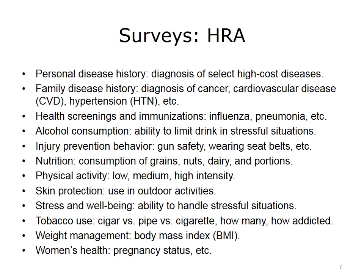Health Risk Assessment (HRA) surveys cover various topics, including Health Screening; Personal Disease History, which may help define diagnosis of select high-cost diseases; Family Disease History, which may reveal diagnosis of cancer, cardiovascular disease, hypertension, and other diseases that have a familial risk factor; Health Screenings and Immunizations, which typically covers immunization for influenza, pneumonia, and other high-impact diseases, especially for the elderly population; Alcohol Consumption and the ability to limit drinking in stressful situations; and Injury Prevention Behavior, such as gun safety, wearing seatbelts, and other injury-prevention behaviors.